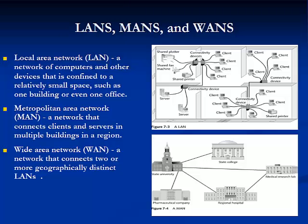A local area network, or LAN, is a network of computers and other devices confined to a relatively small space, such as one building or even one office, though it could also cover a larger area like a campus. A metropolitan area network, or MAN, is a network that connects clients and servers in multiple buildings in a region or city. A wide area network, or WAN, is a network that consists of two or more geographically distinct LANs or MANs, such as between cities across the country.